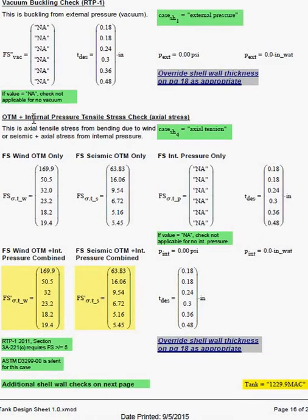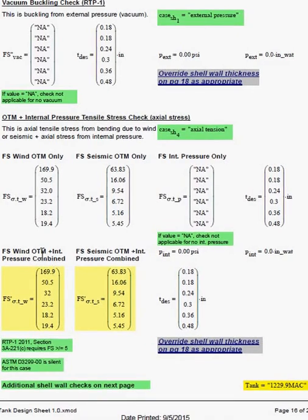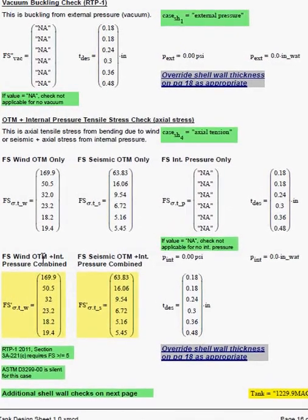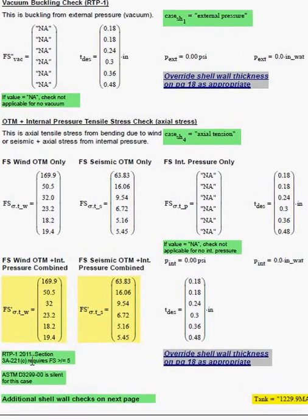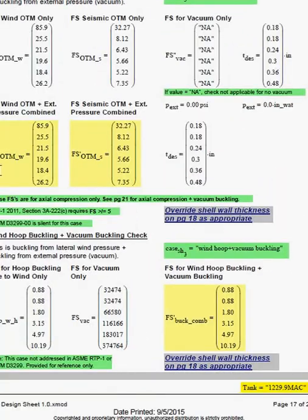Overturning moment plus internal pressure tensile check. And there is an overturning moment for wind, for seismic. And overturning plus buckling is checked.